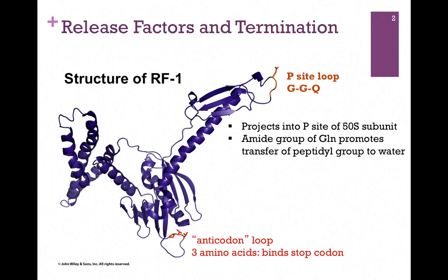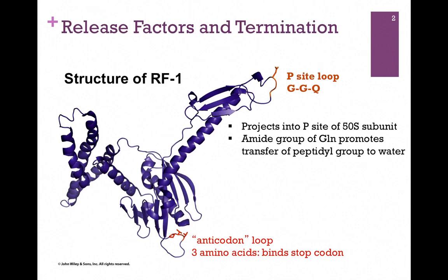Its function is to release the polypeptide chain. Remember, it's still bound to that tRNA molecule. For that purpose, it has a p-site loop highlighted here in brown. It's called a p-site loop because it projects into the p-site of the large subunit. It has a conserved sequence, glycine-glycine-glutamine, and it's the amide group of the glutamine that promotes transfer of the peptidal group to water. In other words, it hydrolyzes the peptide and releases it from the tRNA molecule.